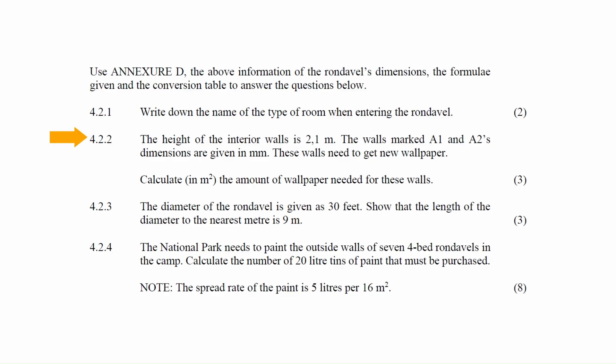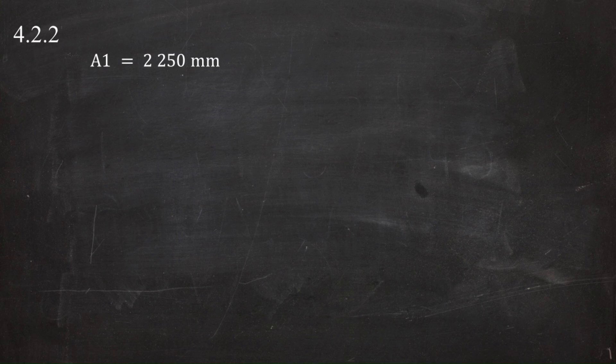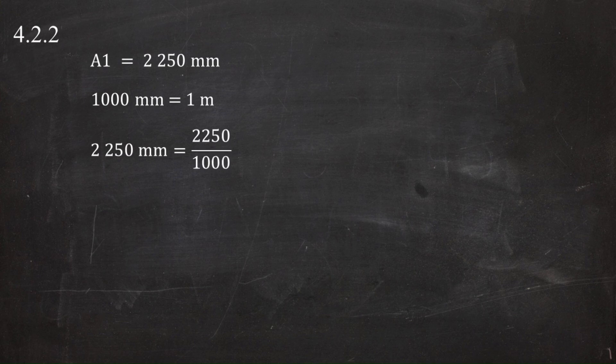In question 4.2.2, the height of the interior walls is 2.1 meters. The walls marked A1 and A2 have dimensions given in millimeters and need new wallpaper. From the floor plan, wall A1 has a length of 2,250 millimeters. Since the answer must be in square meters, we convert: 2,250 mm divided by 1,000 equals 2.25 meters.